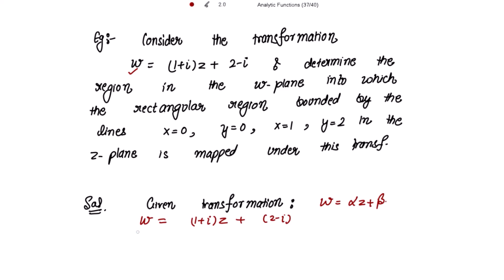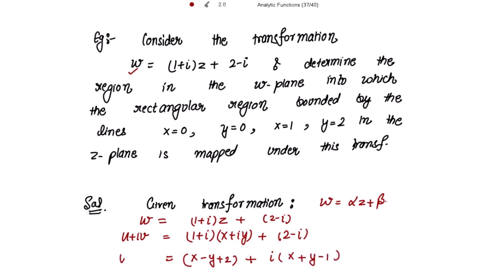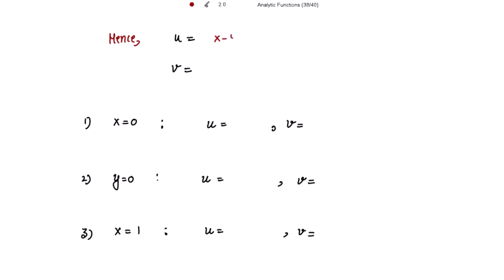To start, put w = u + iv, so u + iv = (1 + i)(x + iy) + (2 - i). Simplifying the right-hand side by collecting real and imaginary parts separately gives: real part = x - y + 2, imaginary part = x + y - 1. From here we get u = x - y + 2 and v = x + y - 1.